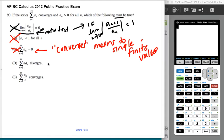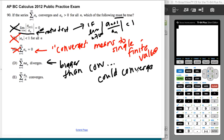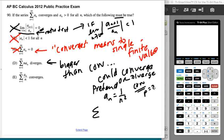Bigger than a convergent series could converge or diverge. Let me give you an example of that. Let me pretend for a sec that a sub n was one over n squared. We know that converges because that's a p series. So we know that this converges because it's a p series where p is two.